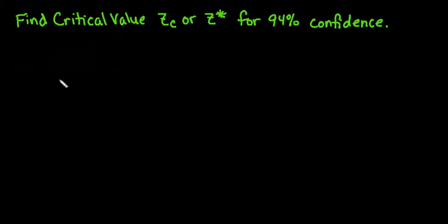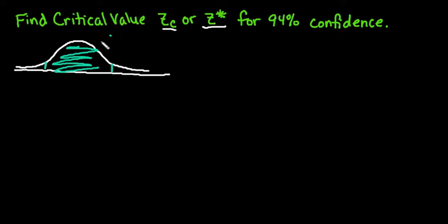For this video, what I want to do is show you how to find the critical values for 94% confidence for Z intervals. So for this, what we have is we are trying to find, depending upon your textbook, you may see it as Z_c or Z star, we are trying to find the Z scores that correspond to having 94% of the area in between.